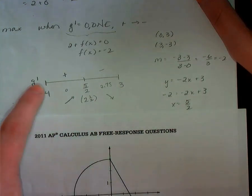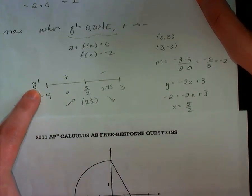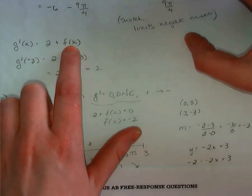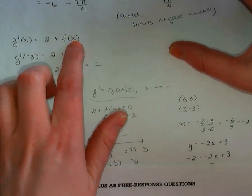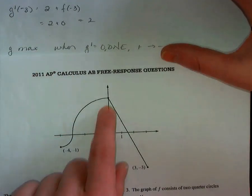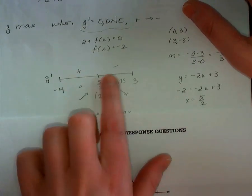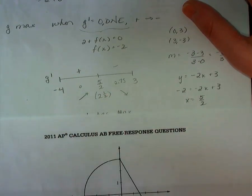Now remember, this is getting subbed into g prime, which is equivalent to 2 plus f(x). So don't forget that. So 2 plus f(0). f(0) is 3, so that's going to be positive.